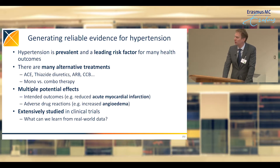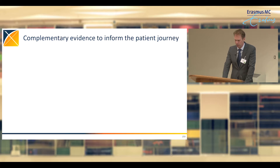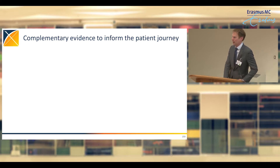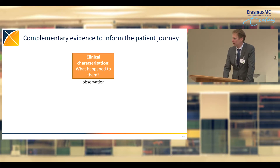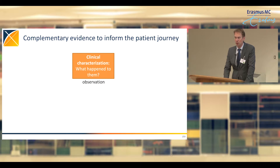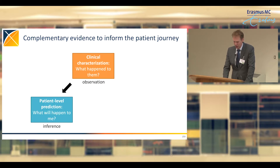Some effects are intended — such as reducing the risk of acute myocardial infarction — while some are unintended adverse reactions. For example, some of these drugs actually increase the risk of angioedema. Hypertension treatments have been extensively studied in clinical trials, and the question is what can we learn additionally from real-world data. We categorize the evidence generated in Odyssey into three buckets, the first being clinical characterization — Anthony Senna will show you tools for that.